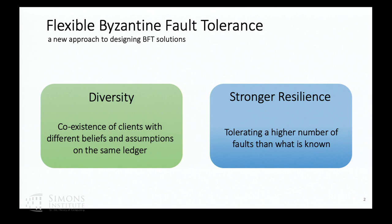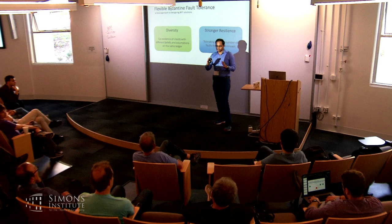Diversity over here means you can use the same ledger. You can have your own assumptions, and yet you can coexist so far as the assumptions are correct. Nakamoto already allows for that, right? Because different people can have different K blocks, different KBs. So, at a very abstract level, yes — it is in line with that philosophy.